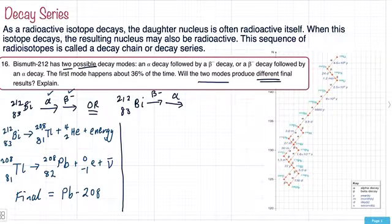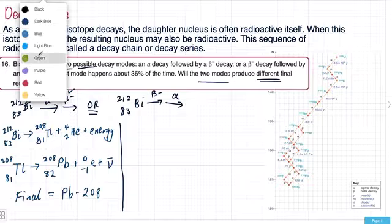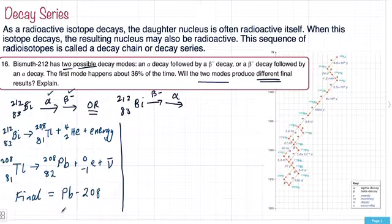So now we can do the other version here. If we have the decay happening the other way, this first mode happens 36% of the time. Which means that this second mode happens 64% of the time.